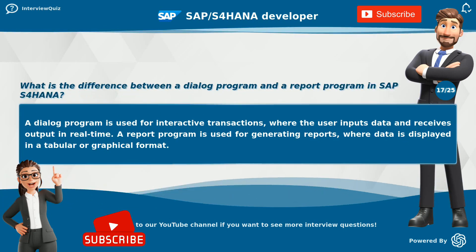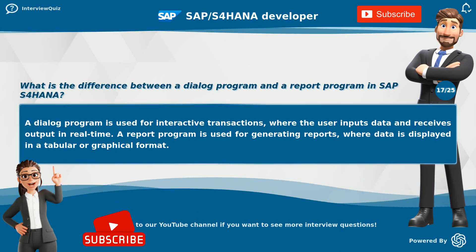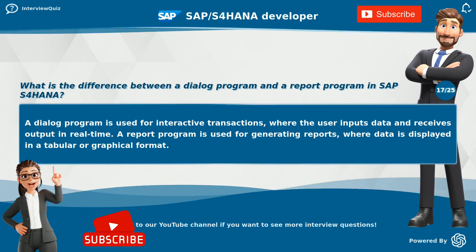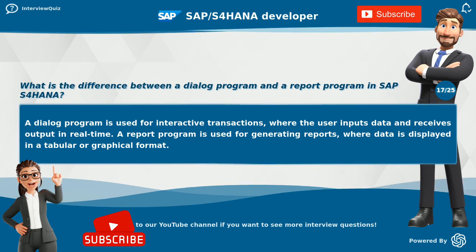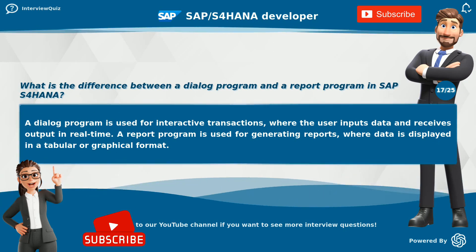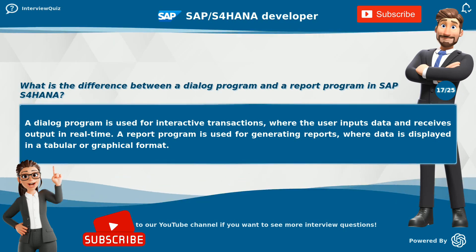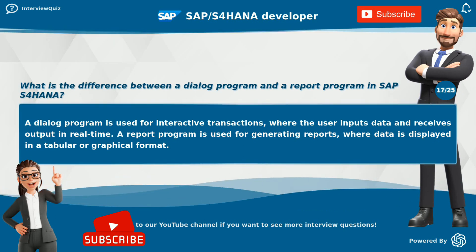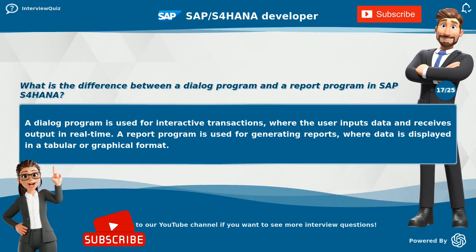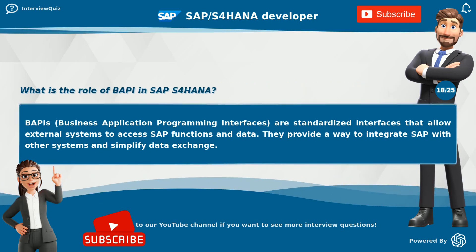What is the difference between a dialog program and a report program in SAP S4 HANA? A dialog program is used for interactive transactions, where the user inputs data and receives output in real-time. A report program is used for generating reports, where data is displayed in a tabular or graphical format.